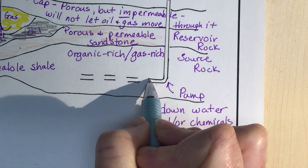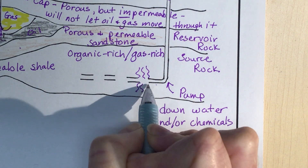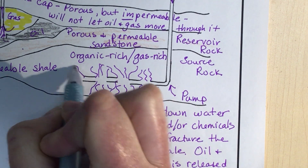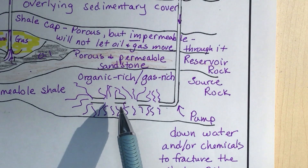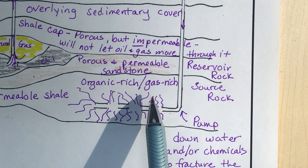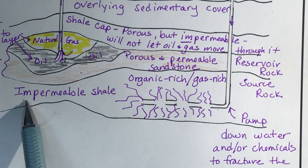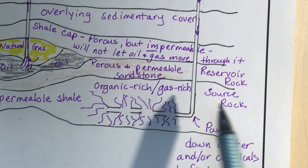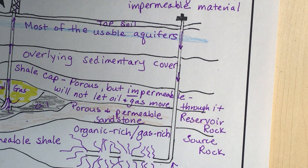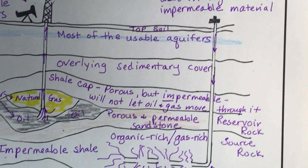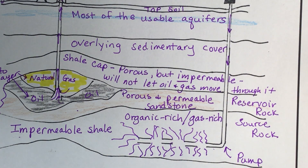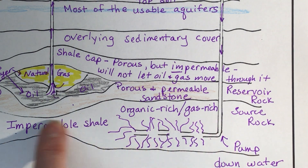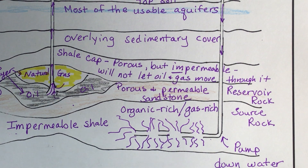They send water or chemicals down and the pressure cracks the rock — fracturing all of the shale around the pipe. The shale is impermeable, meaning the natural gas cannot normally move through it. But now there are cracks and fractures, allowing the natural gas to move into the pipe and up to the surface. That is the technique of fracking: cracking impermeable shale to release the gas trapped within it.